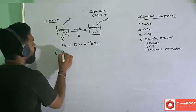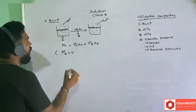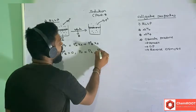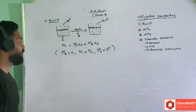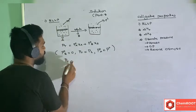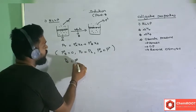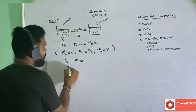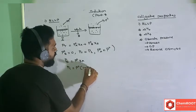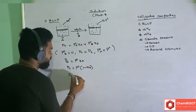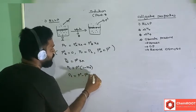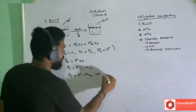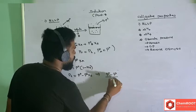Since B is a non-volatile solute, P0_B = 0. So P_total becomes the vapor pressure of solution Ps, and P0_A is the vapor pressure of pure solvent. We get: Ps = P0 · χ_A. Since χ_A = 1 − χ_B, expanding gives Ps = P0 − P0·χ_B, so Ps − P0 = −P0·χ_B.